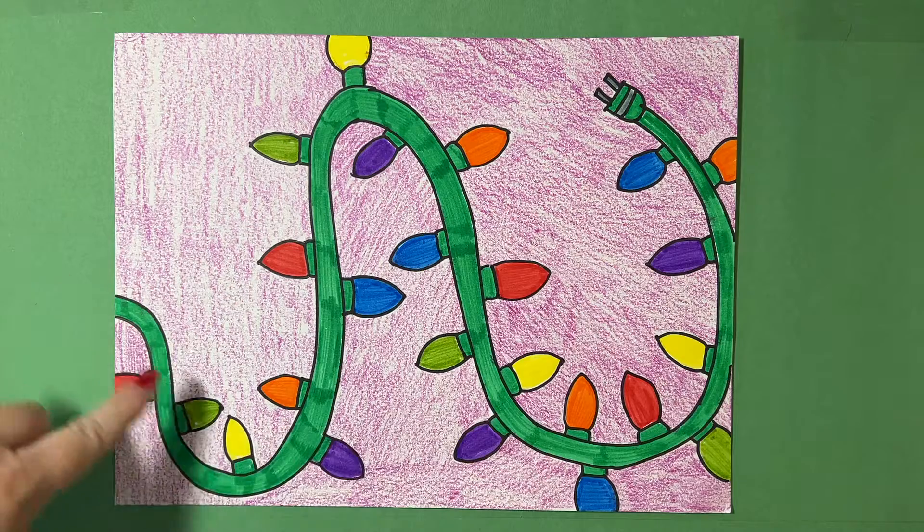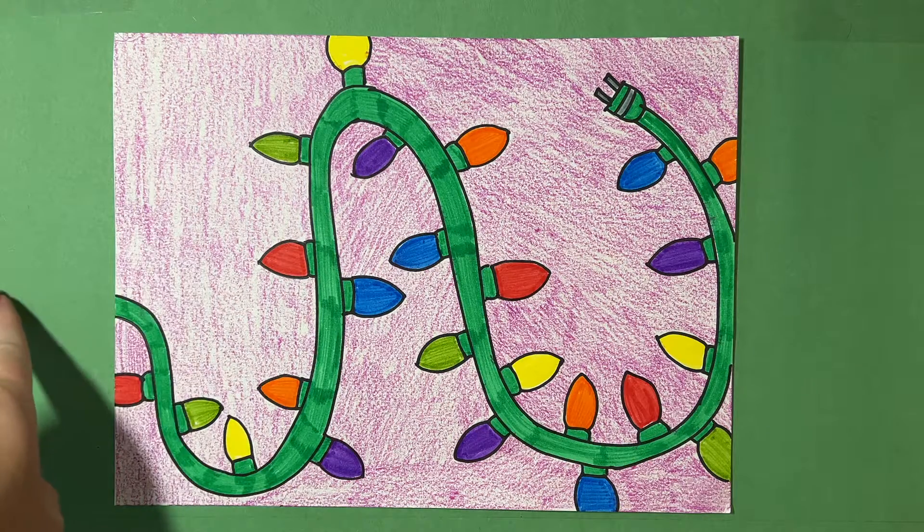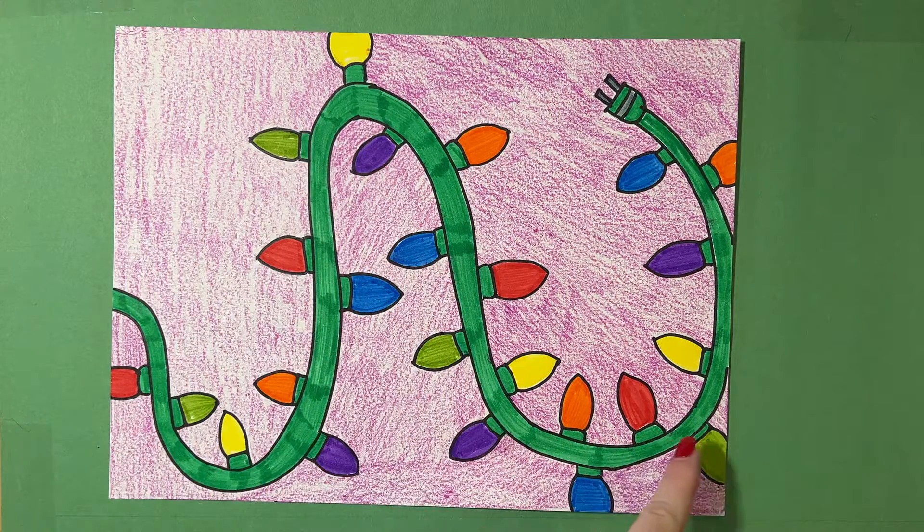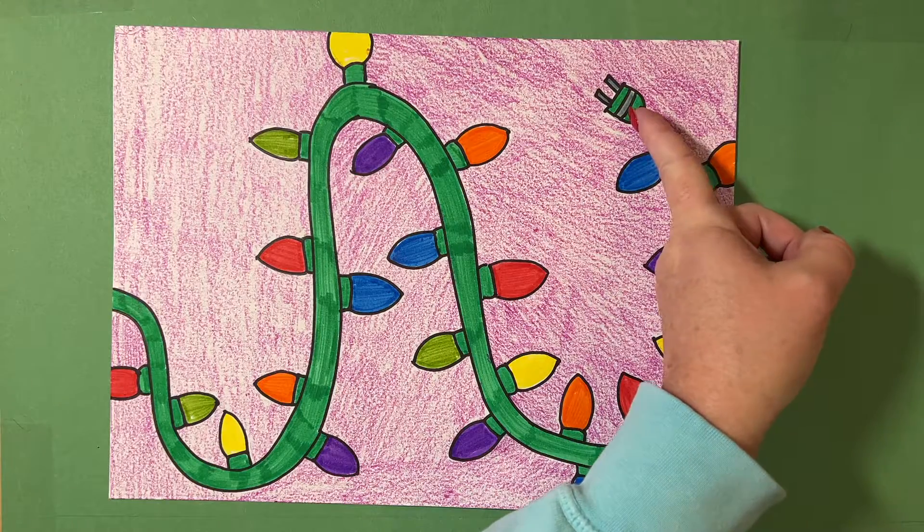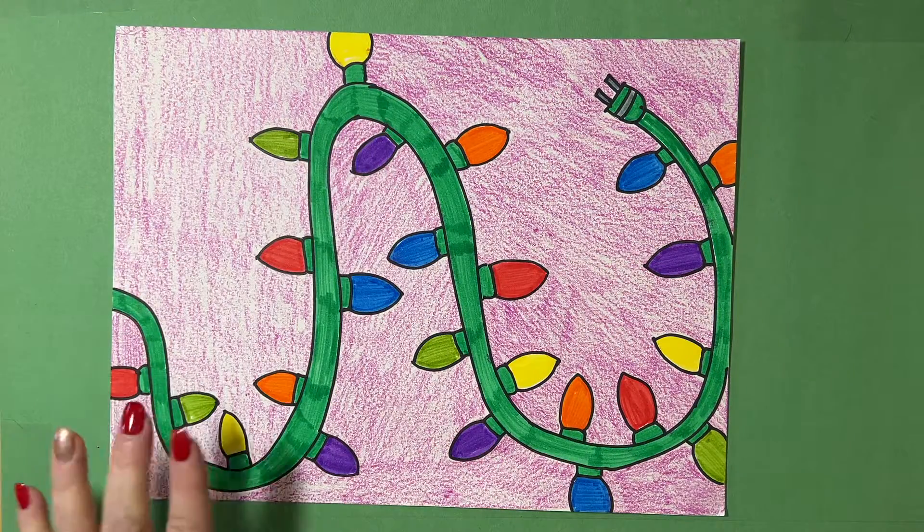Like in this example right here, you can see my Christmas lights or my holiday lights coming off right here and coming around. It's real curvy and it loops around and ends in a plug. And then all along here, I've got different colored holiday lights.